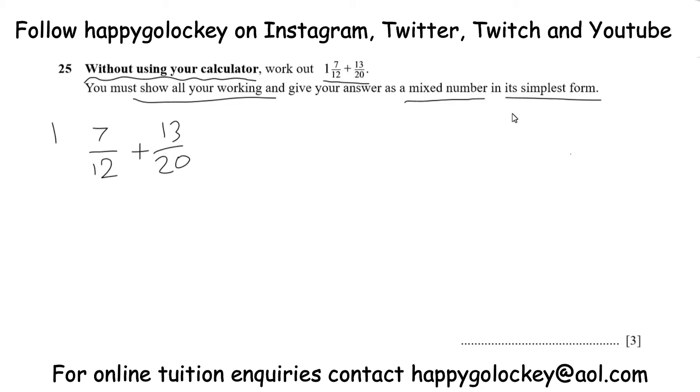The best way to work out a common denominator is to find a number that 12 and 20 both go into. If it doesn't immediately spring to mind, you can just list the multiples somewhere else on the page.